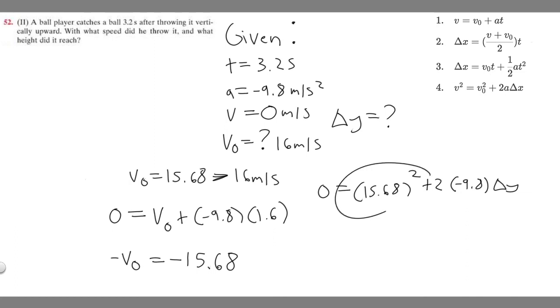So I'm going to move this to the other side. So we have 15.68 squared. And this is going to be minus that equals 2 times minus 9.8 is going to be minus 19.6 delta y. And then so if we square this number, it's going to become 245.8624. And then we have this minus sign. So minus that equals minus 19.6 times delta y.